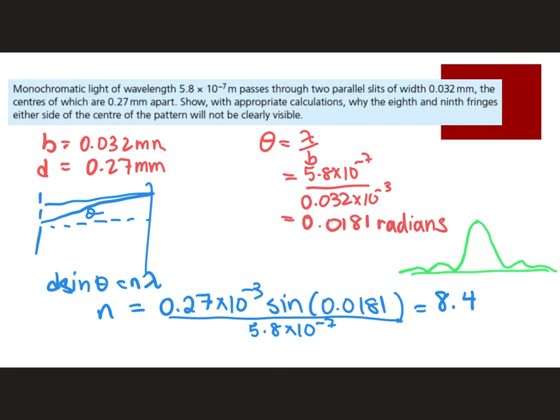And let's double-check the wording of the question. It says, show why the center pattern will not be clearly visible. So because they're both around where our first minima occur, they will be very difficult to see. They will have extremely low intensity. Don't forget to always go back and check the question to say, what is it really asking me to talk about?